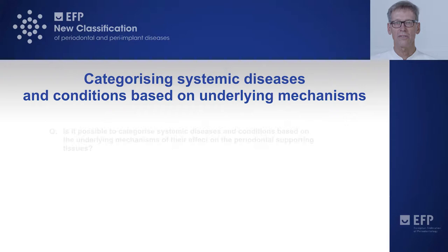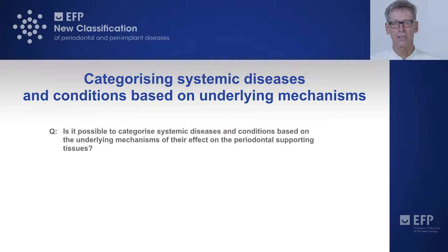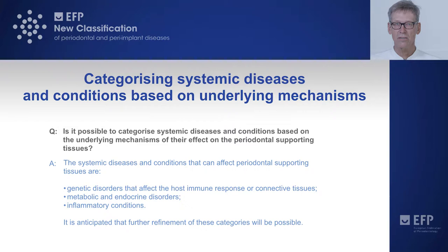And these are the answers. Number one, in terms of the underlying mechanisms and the way to organize all these many, sometimes rare, entities — yes, there are genetic disorders that affect the host immune response or the connective tissues, there are metabolic and endocrine disorders, and there are inflammatory conditions.